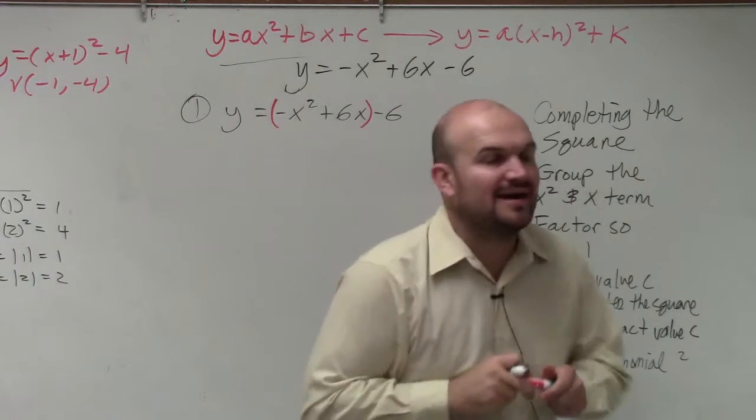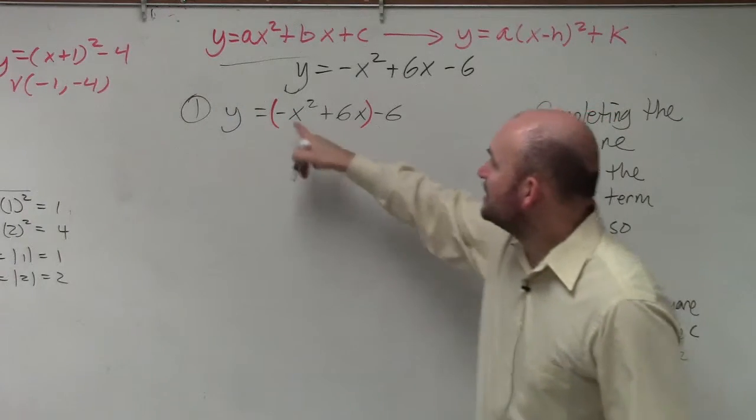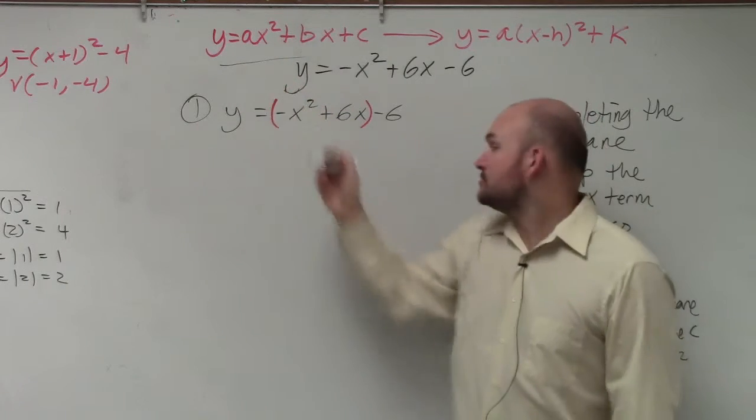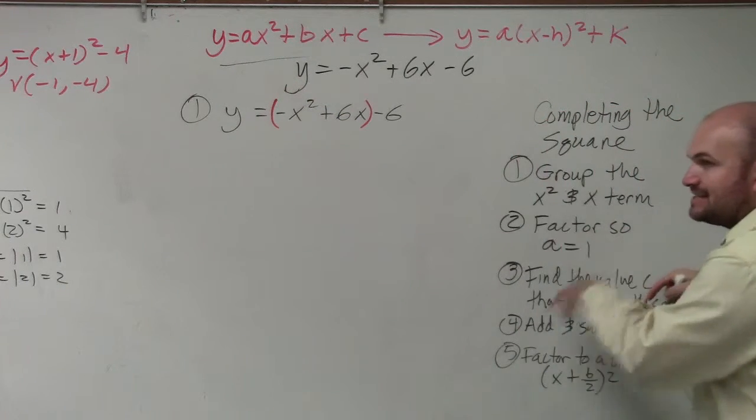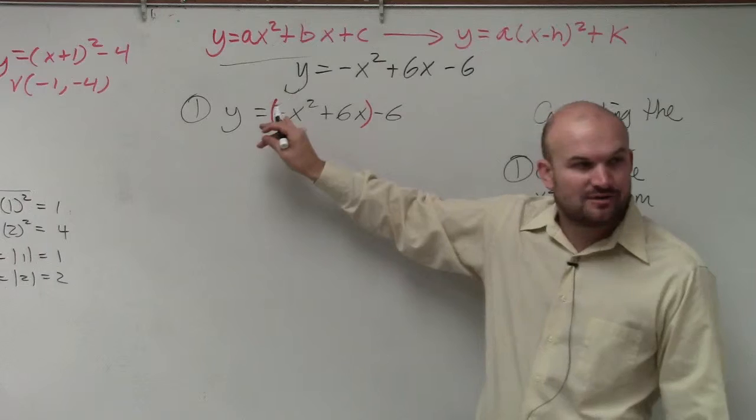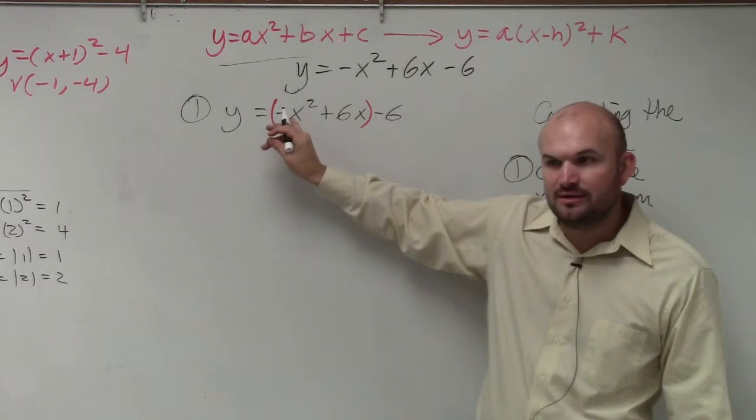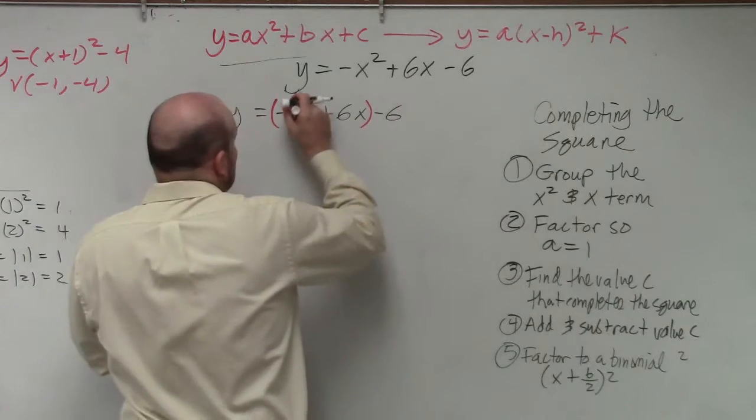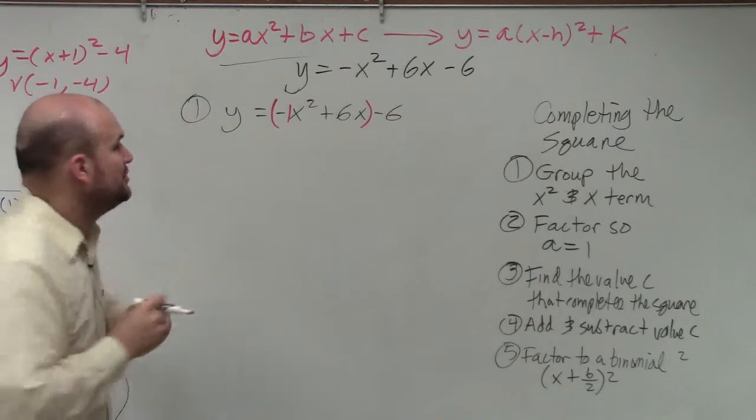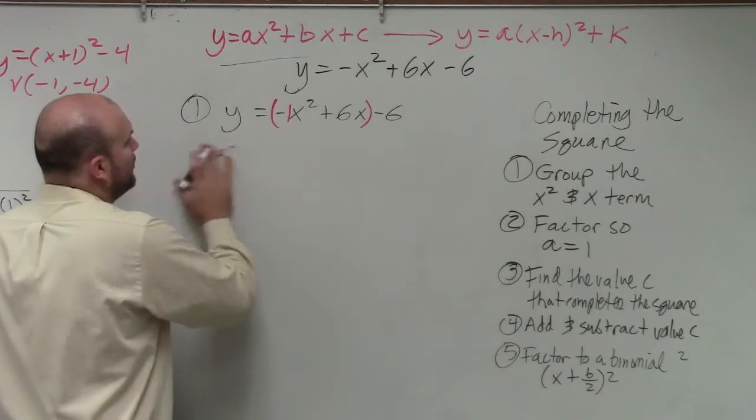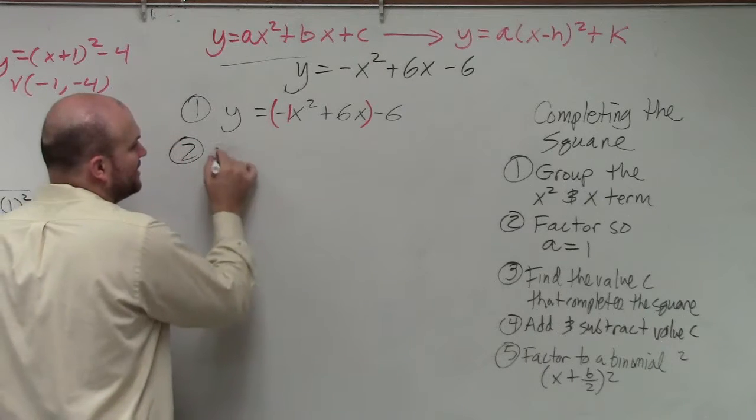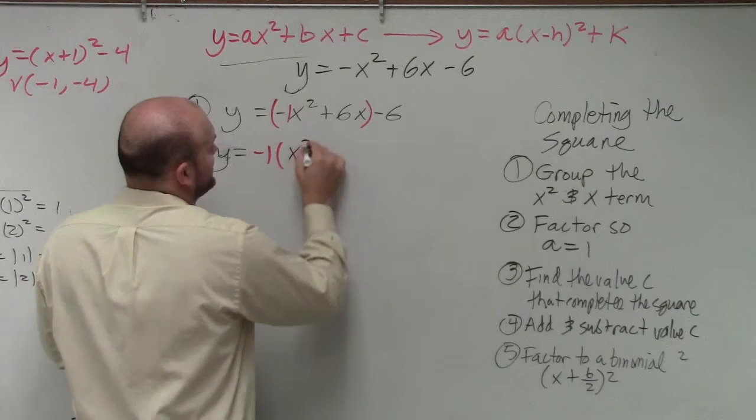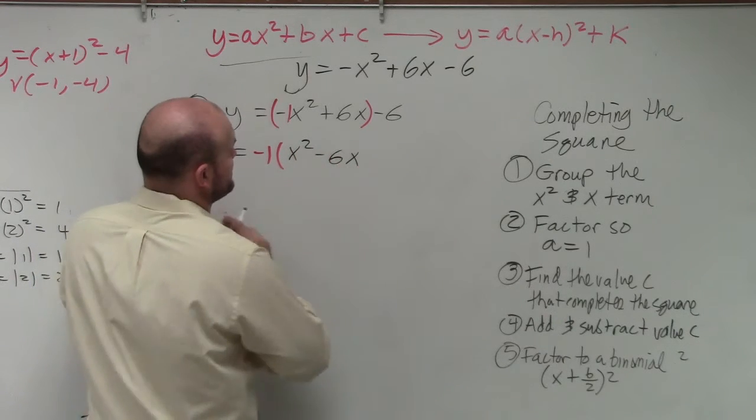Now we have something in step two, because you guys can see our a is not equal to positive 1. So we need to factor so a is equal to 1. So what can I factor out to make sure that a is equal to 1? I can factor out a negative 1, right? Because technically, this is a negative 1. So step two comes into play here. So y equals negative 1 times x squared minus 6x.